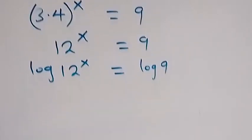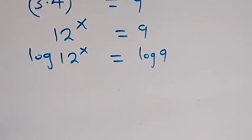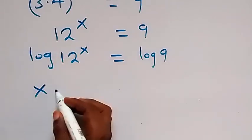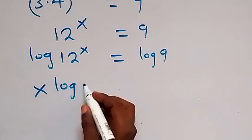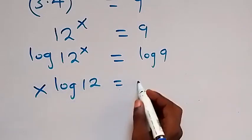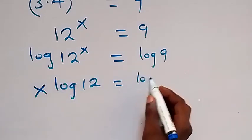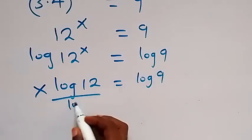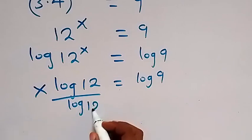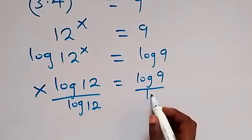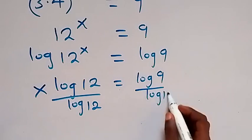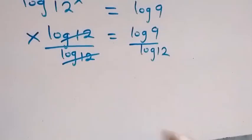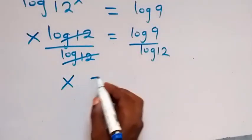Applying the power law of logarithms, we can bring the power to the front, so we have x log 12 equals log 9. Then we divide both sides by log 12 to isolate x, and log 12 cancels, leaving us with x equals log 9 over log 12.